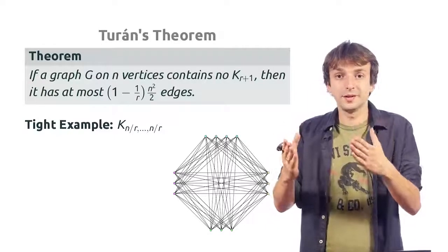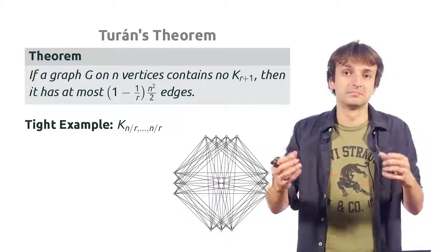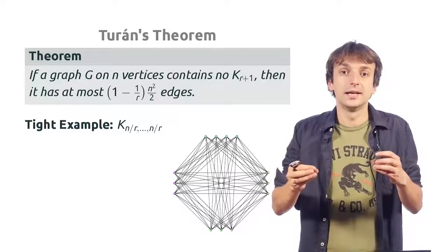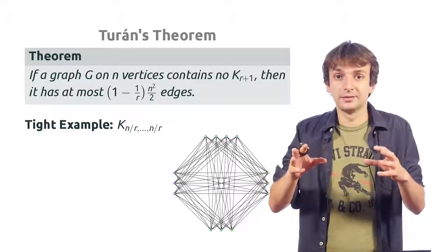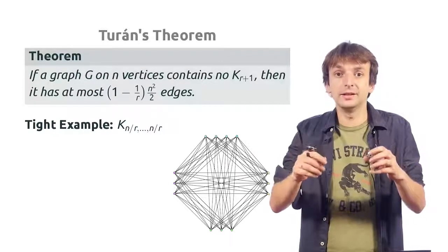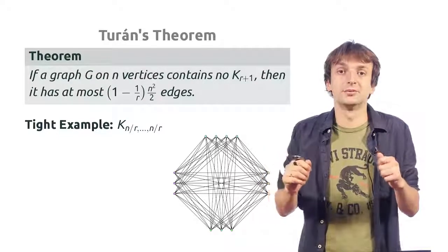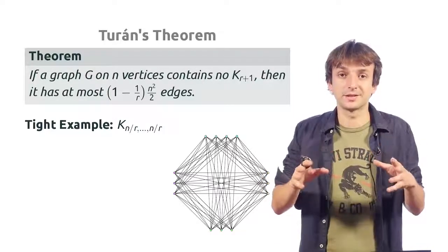For Turán's theorem, there is a more general tight example, which is called a Turán's graph. You just partition all the vertices of the graph more or less evenly in r parts and connect all pairs of vertices from different parts.